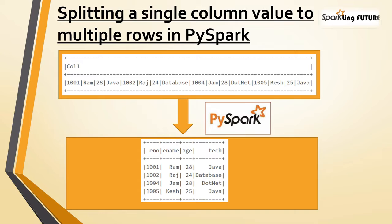This question is asked by one of our friends and today let's solve this. If you see the entire record, the pipe-delimited record is present under column one. Now let's see how to split that single column into four columns and four different rows. Here if you see: 1001, Ram, 28, Java - that is the first record. Then the second record starts with 1002, then name, age, and technology. The third record starts 1004, and so on. Everything comes in a single column, and we need to split that delimited value to multiple rows in PySpark.